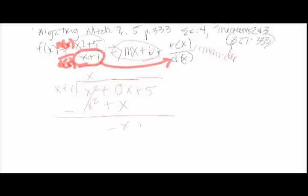I subtract and I get negative x plus 5. That means that's minus 1 and then I have minus x minus 1 that I am subtracting. This will cancel and my remainder will actually be 6.